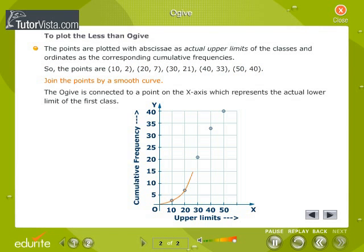Join the points by a smooth curve. The ogive is connected to a point on the x-axis which represents the actual lower limit of the first class.